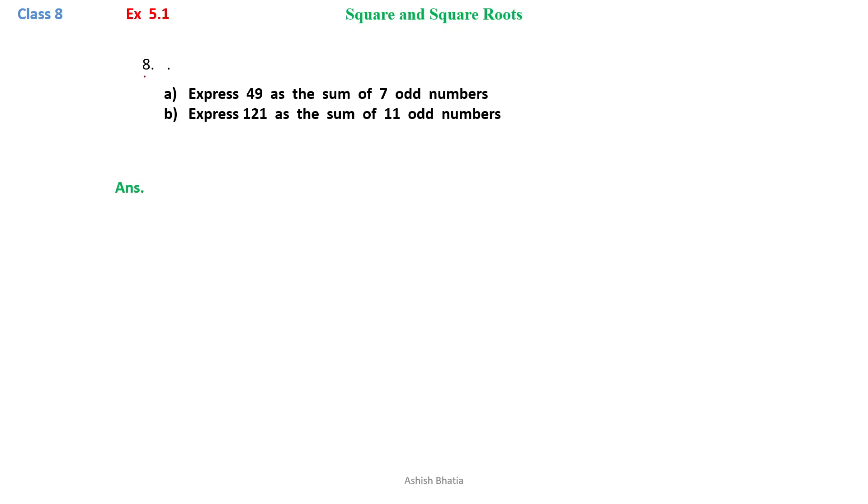Exercise 5.1, question number 8, part A: express 49 as the sum of 7 odd numbers.